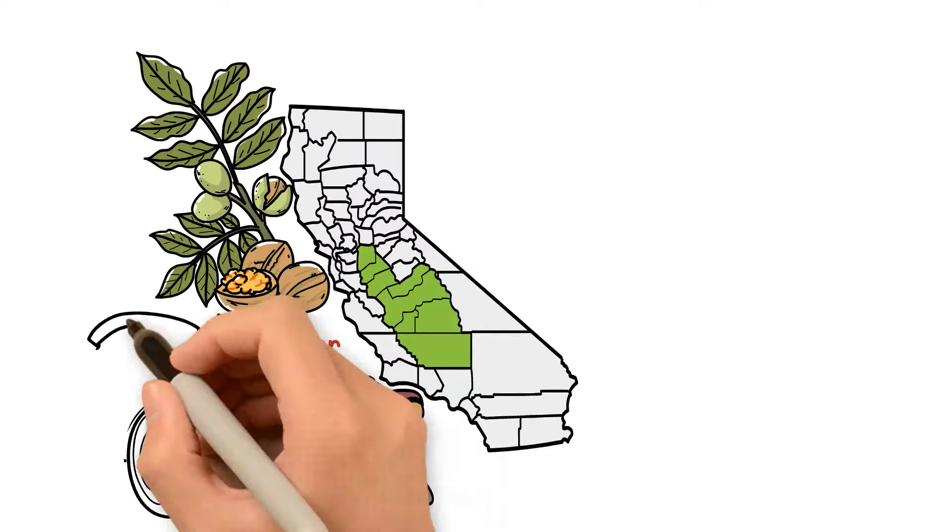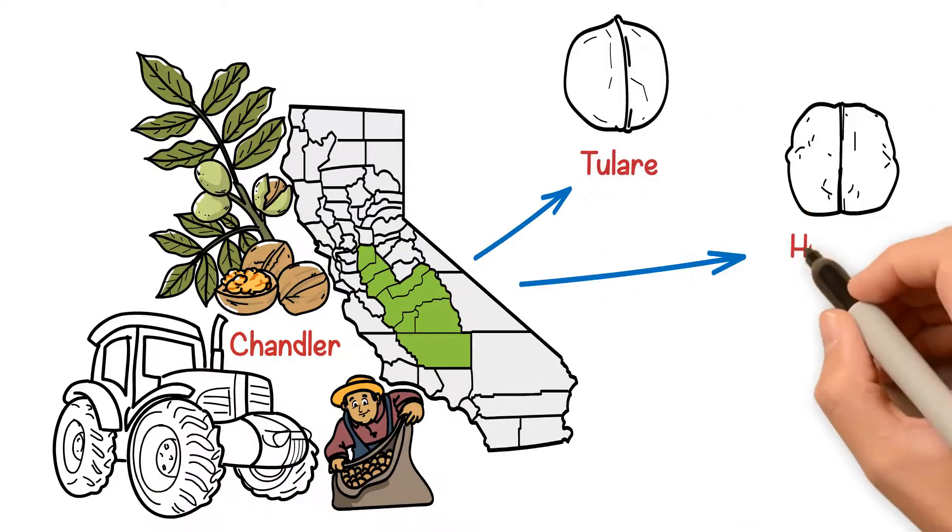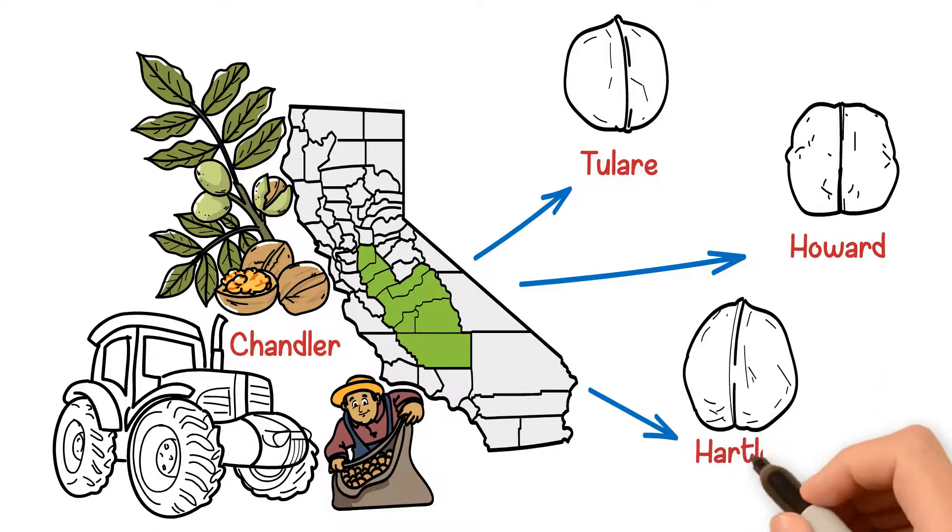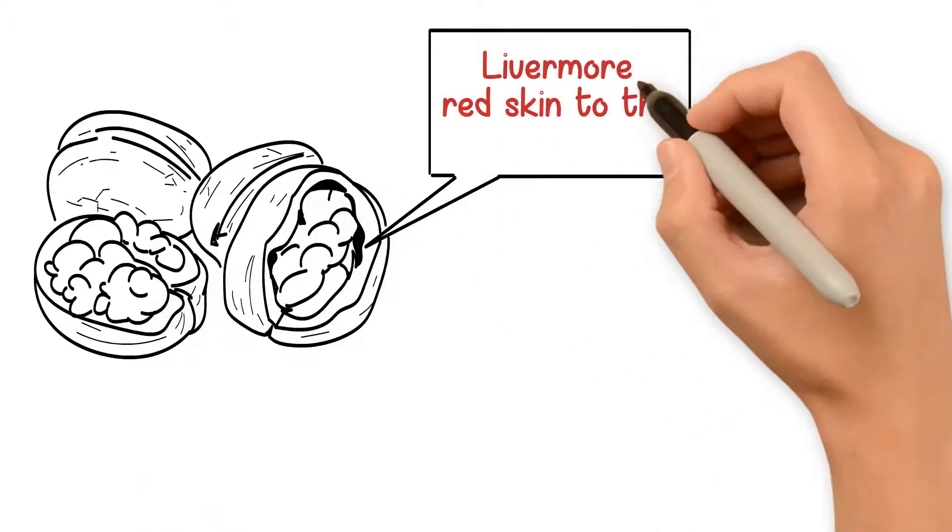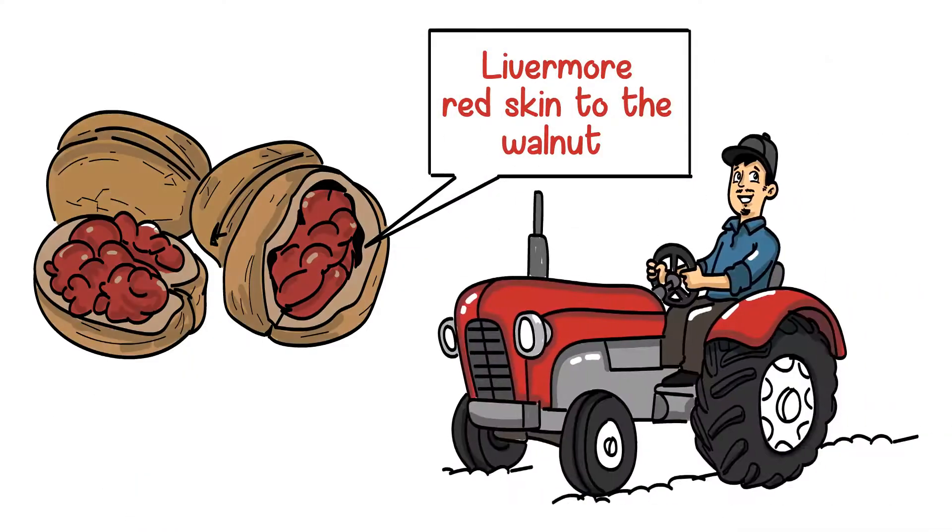Although Chandler is the most produced in the area, there are others called Tulare, Howard, and Hartley that make up a good portion of the production in the state. There is even one called a Livermore that has a red skin to the walnut rather than light brown as the others do.